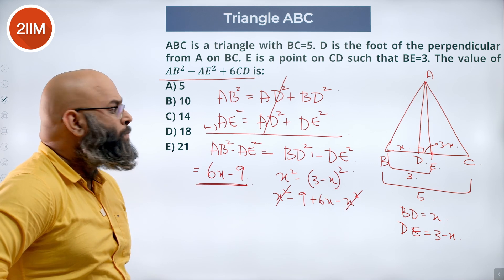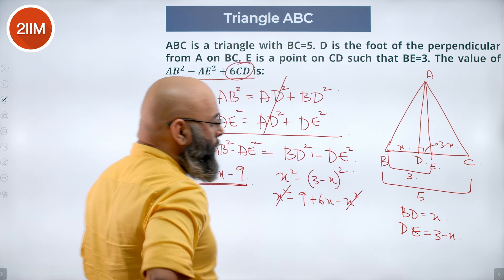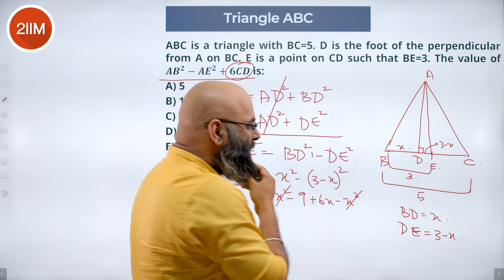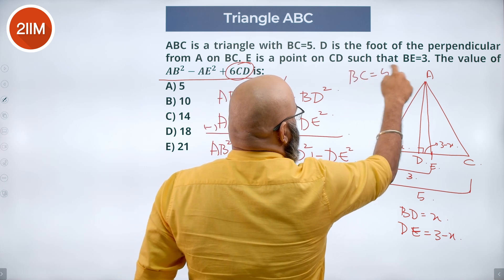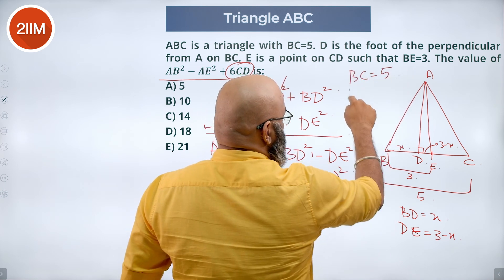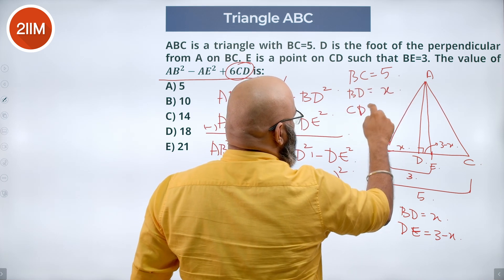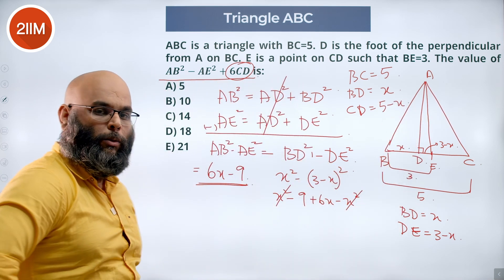So we have figured this out. The question also has 6CD in it. If we look at CD, we need a value for CD. Now we know this entire BC is equal to 5. We also know BD we have marked it as X. So CD automatically becomes 5 minus X. That's all. We have figured that one as well.